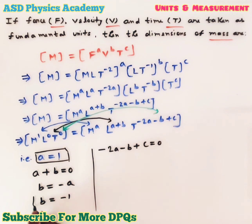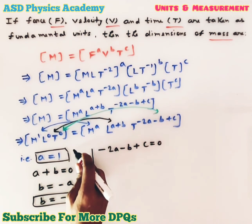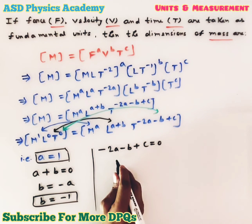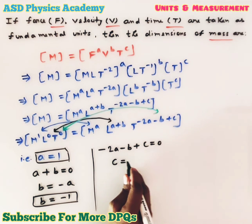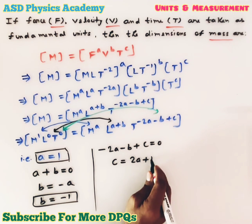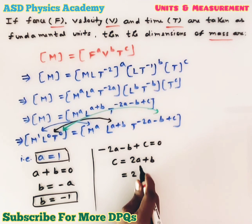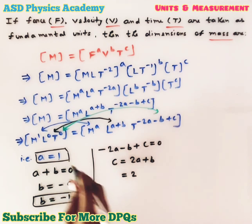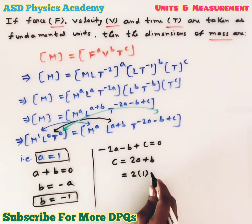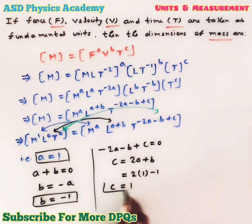Now to find C: C = 2A + B. The value of A is 1 and the value of B is −1, so the value of C is 2(1) + (−1) = 1.